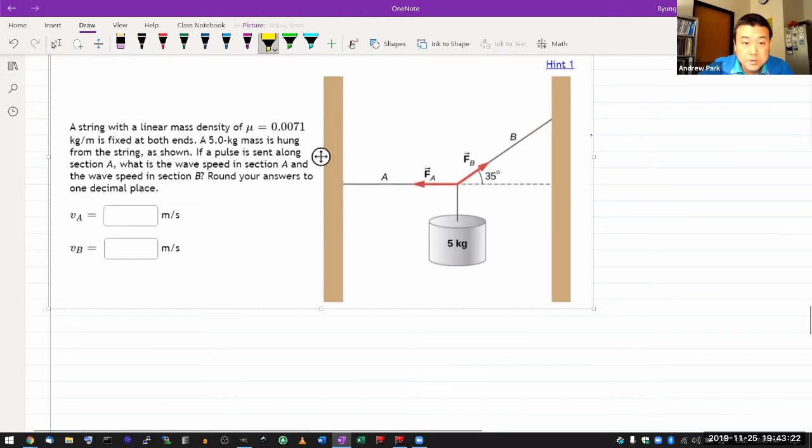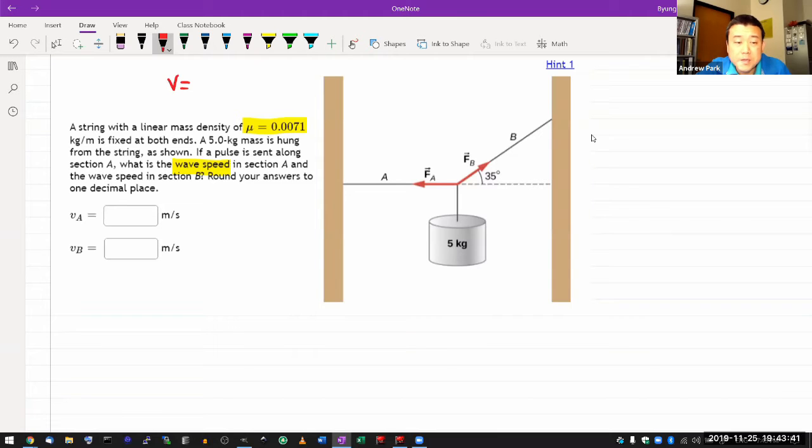This question gives you the linear mass density of the string and it's asking for the wave speed. Having been given linear mass density, I am remembering wave speed is equal to square root of tension divided by mu, but I'm not seeing any information for tension. And I hope as you look at this, you realize not too late that this is a static equilibrium question.